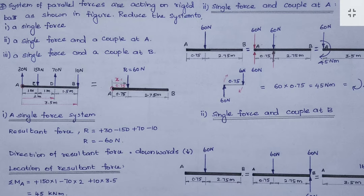Upward forces we give positive, downward forces negative. Finally, we get minus 60 Newton, which means the force is acting downwards. So we have converted the four forces into a single resultant force of 60 N downward.